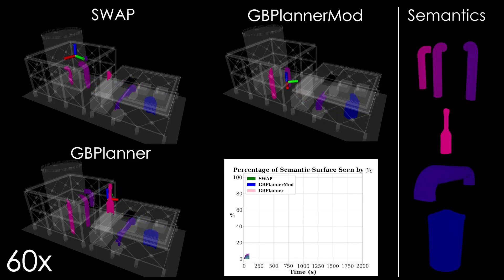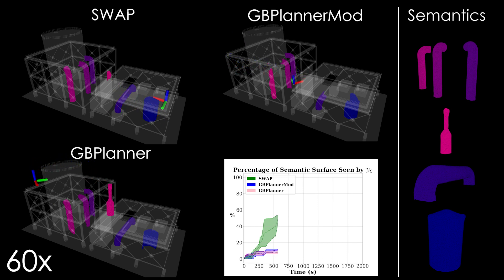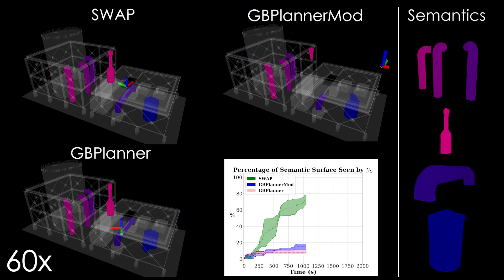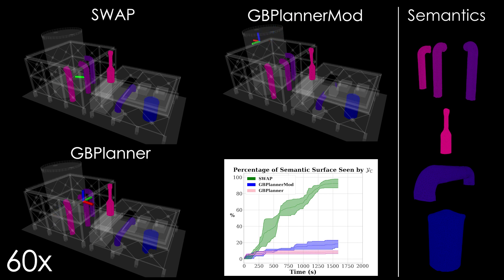We compared the performance of the planner against our previous work on graph-based exploration path planning. The original method optimizes for volumetric exploration only. Hence, we also compare the proposed planner with a modified version of the exploration planner that optimizes for surface coverage. As seen from the plot, the proposed planner outperforms both competitors in terms of semantic surfaces seen by the camera.